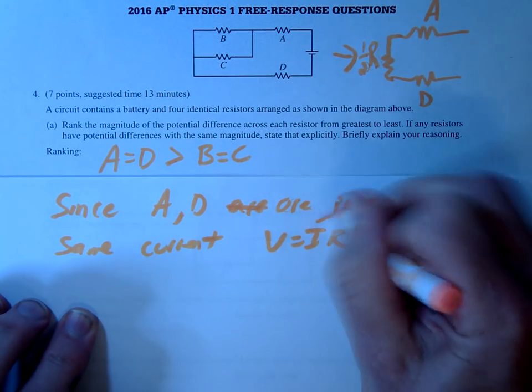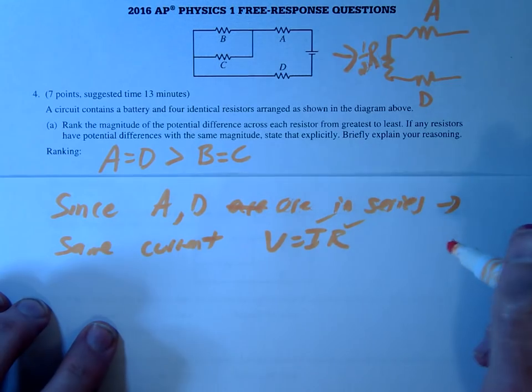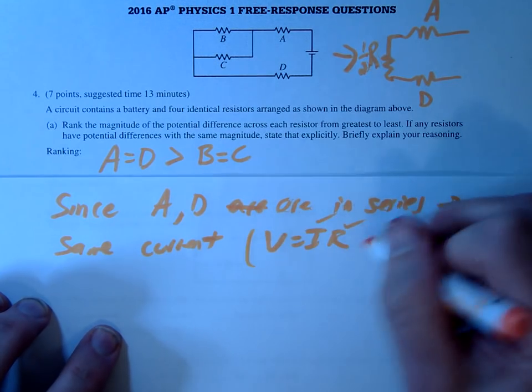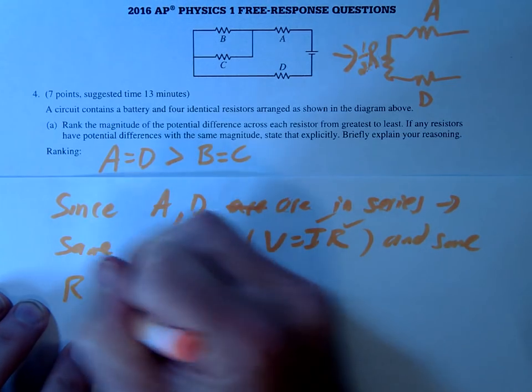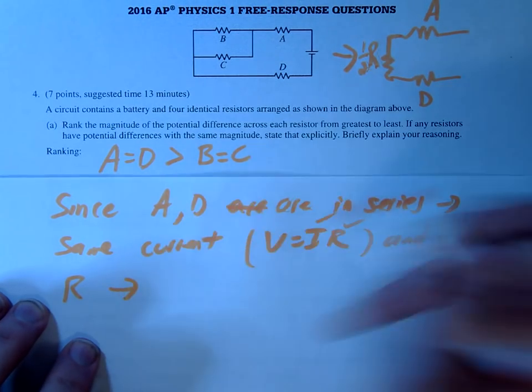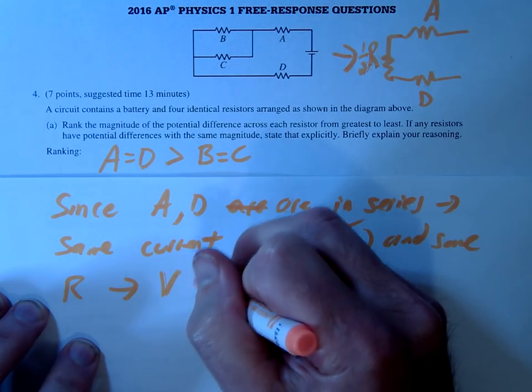Since V equals IR, since they're in series, they have the same current, and they're the same resistance, therefore V is the same.